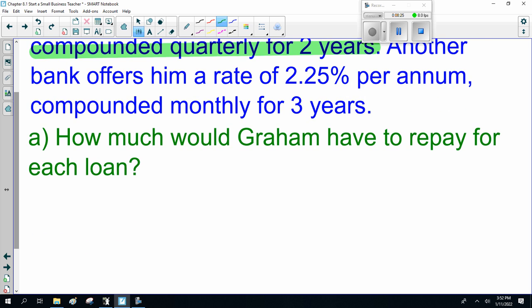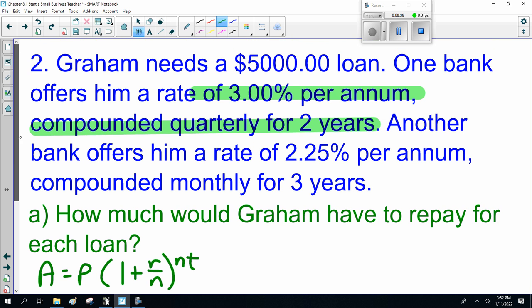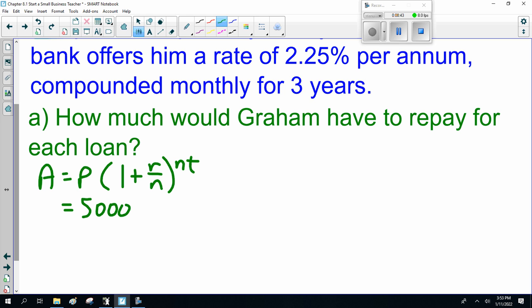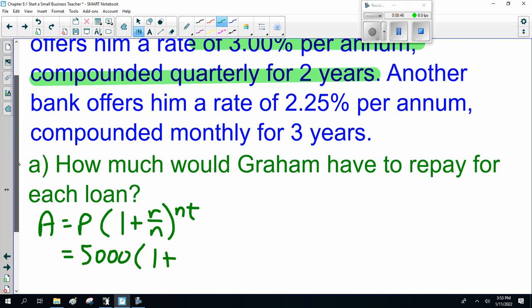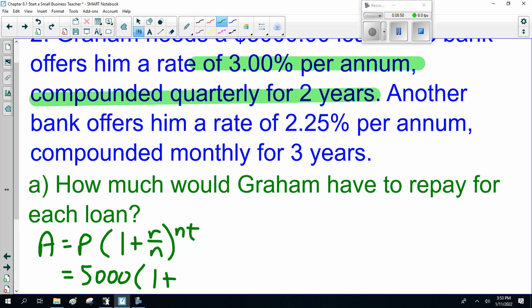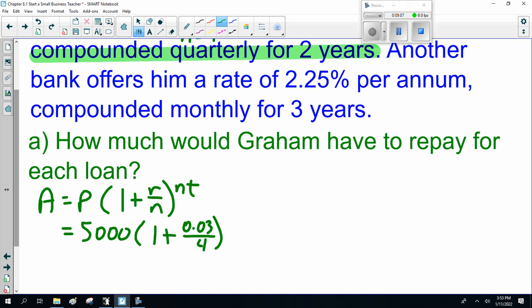So, A is P times (1 plus R over N) to the power of NT. The principal is $5,000. The rate in this first one is 3%. Remember, you divide it by 0.03. The trick: compounded quarterly. That's a fancy way of saying quarter of a year or four times a year. So, this is divided by 4. And 2 years, so 4 times 2. So, plugging the numbers in here.